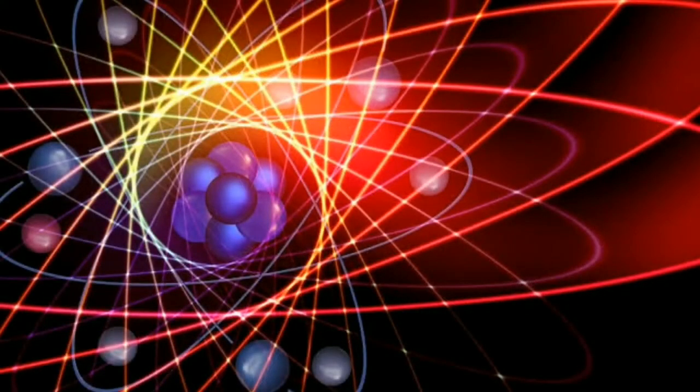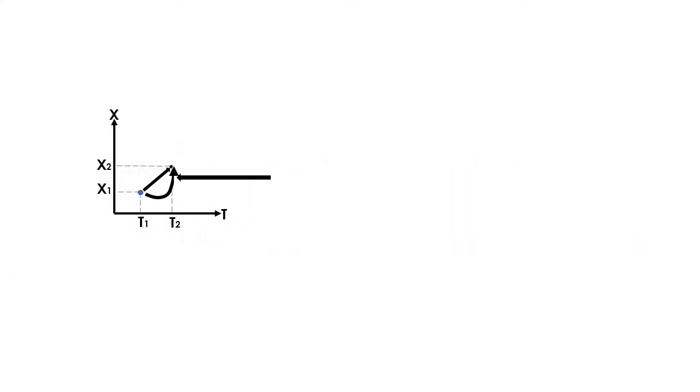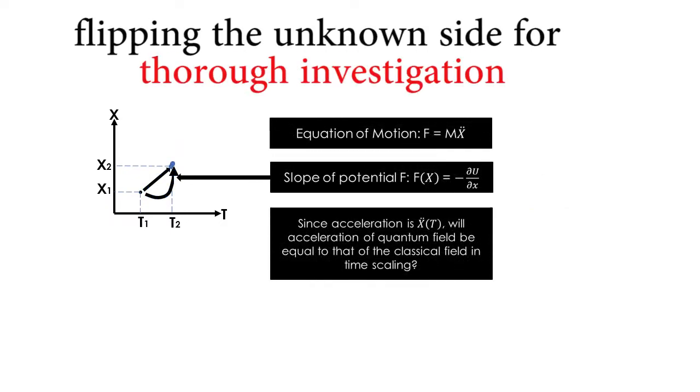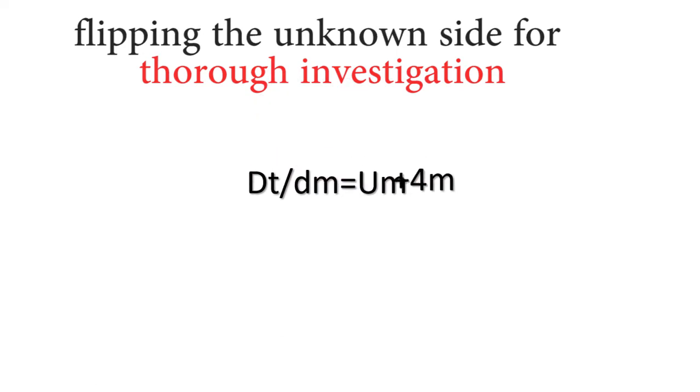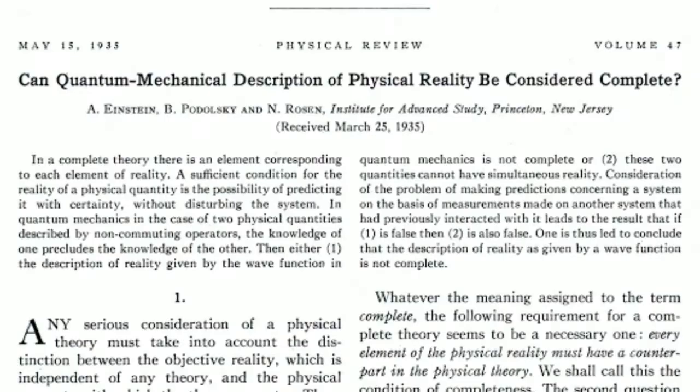The question is, should we settle for probability as determinant of scientific knowledge? Or should we go extra mile in flipping the unknown side for thorough investigation that is capable of reinstating the integrity for which science was known as knowledge of fact?